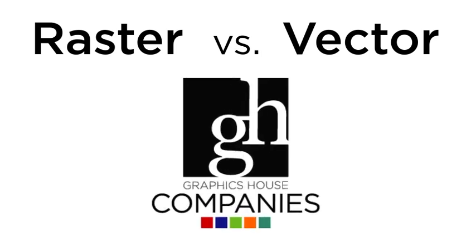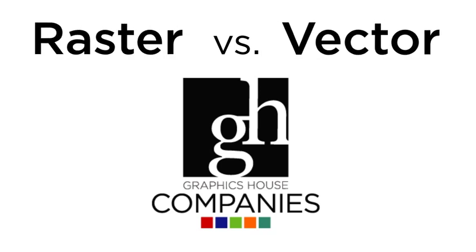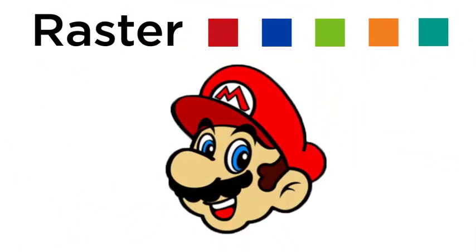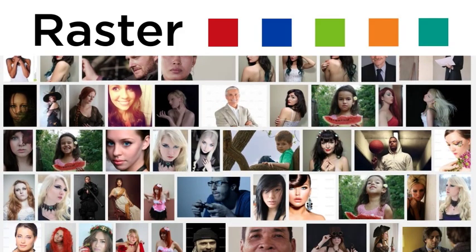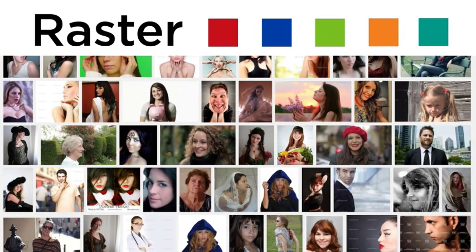With images and graphics, the most important distinction to know is the difference between raster and vector images. Raster images are made up of pixels — dots of color that together form the image, similar to a mosaic. Photographs are always raster images, and most images you find online are likely to be raster, too.